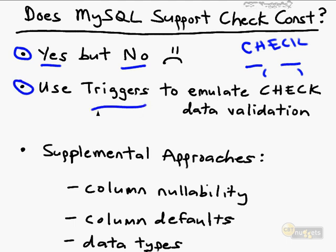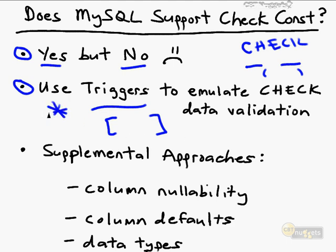The most common workaround is to create a trigger and attach that trigger code to a column to emulate check data validation. A trigger is a piece of code you can create and store persistently in your MySQL database and attach to one or more columns. Triggers can automate database administration tasks, handle auditing and security, and in this context, check whether data coming into a column meets your business parameters — getting as close as possible to check constraint support in MySQL.